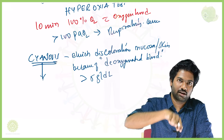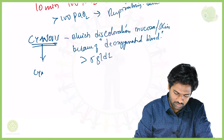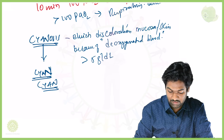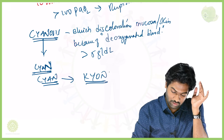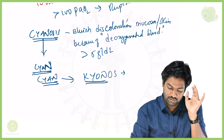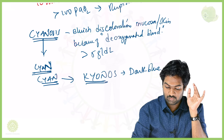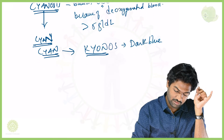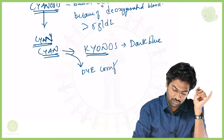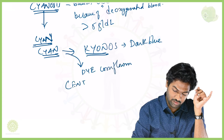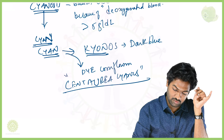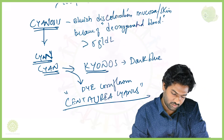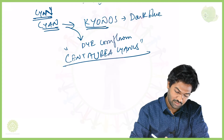The word 'cyanosis' is derived from the word 'cyan.' In Latin it was called 'kyanos' or 'kyanos,' which was the direct meaning for dark blue. It was also the name of a dye from cornflower — Centaurea cyanus — and that is how the word cyanosis came into existence.